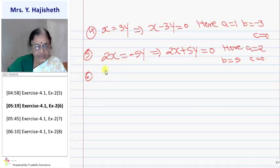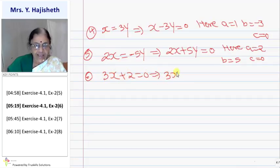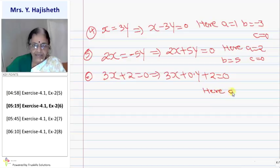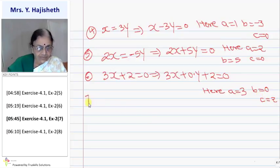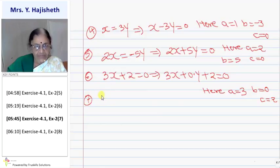Sixth question: three x plus two equals zero. It can be written as three x plus zero times y plus two equals zero. So here a is three, coefficient of y (b) is zero and c is two.